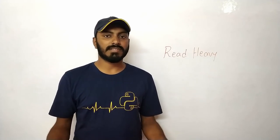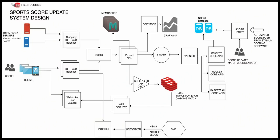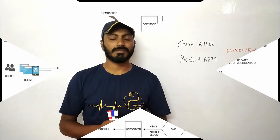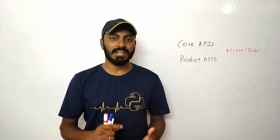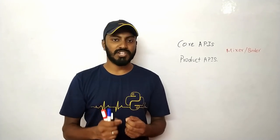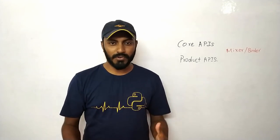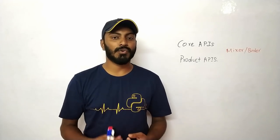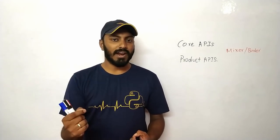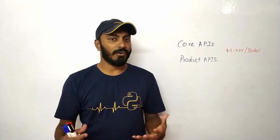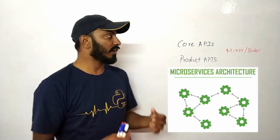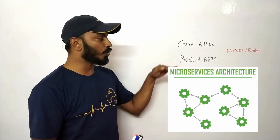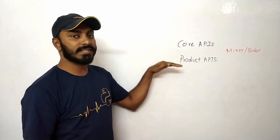The core problem of Cricinfo is: we have the data and we need to serve it to end users without much latency, since sports fans want scores in real time. The solution is to use a microservice architecture and divide the APIs into two categories: Core APIs and Product APIs.